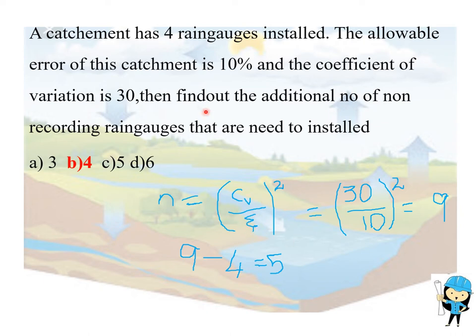In the question itself they have given coefficient of variation is 30 divided by error, that is 10 percent. We should substitute the error in percentage itself, so 30 by 10 the whole square equals 9. They have asked to find out the additional number of recording non-recording raingauges.